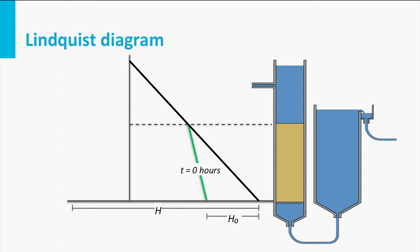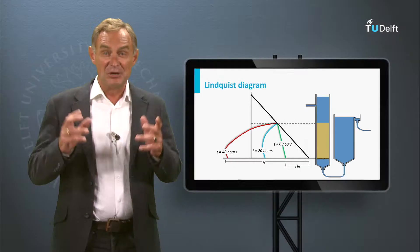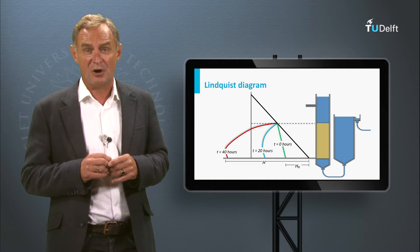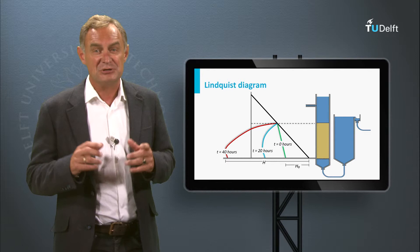With increased clogging, the pressure in the filter bed decreases until pressures below atmospheric can occur — the so-called negative pressures. These must be avoided because of the risk of degassing and consequent disturbance of the filter bed. The maximum allowable filter bed resistance is thus dependent on the occurrence of negative pressures.